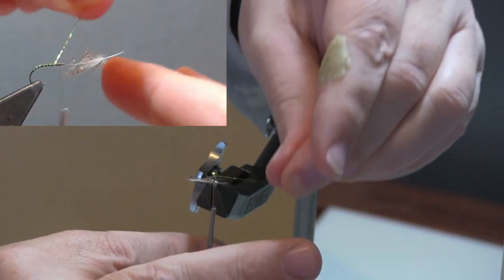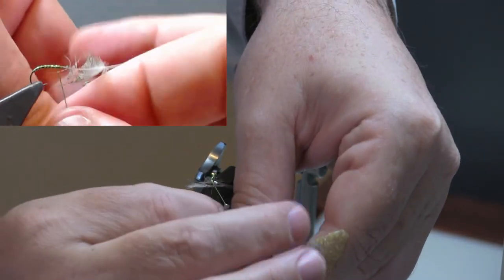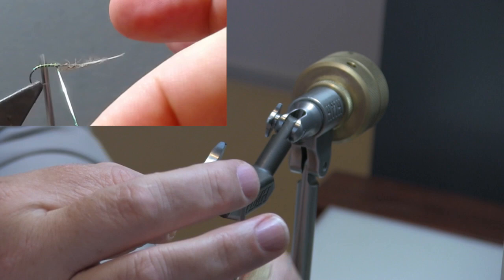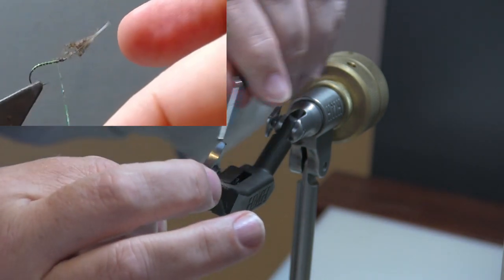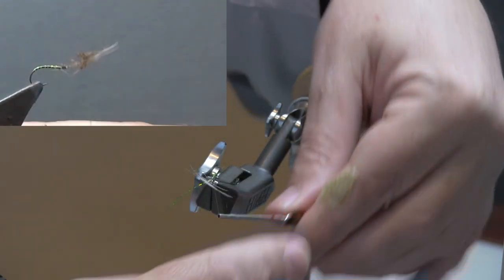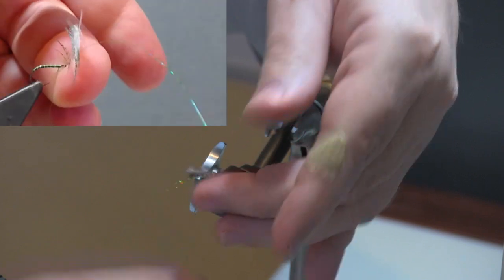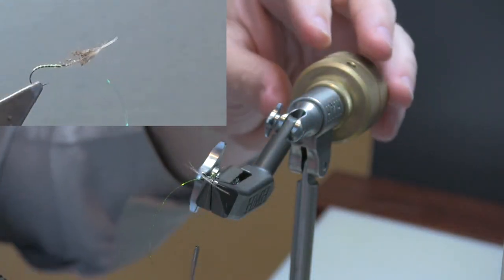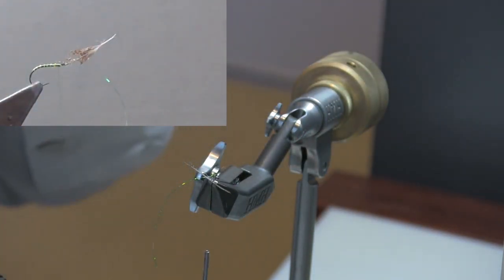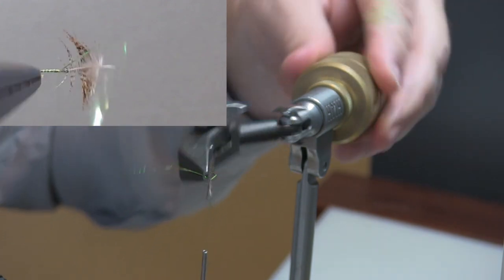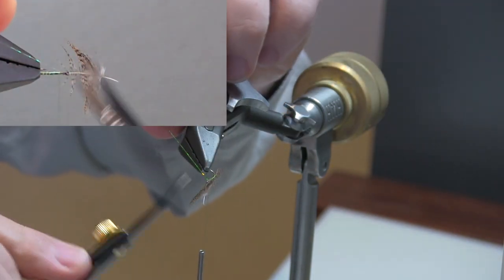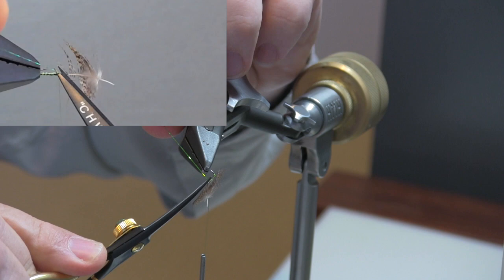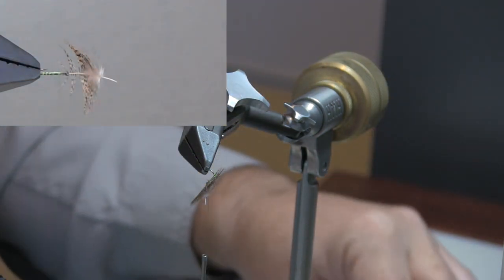Work that in around that feather. And then when I get it back towards where I tied in, I'm going to bring the thread in behind and tie off that tinsel. To trim that away, to make sure I don't cut my thread, I'm going to rotate my vise around and trim that off.